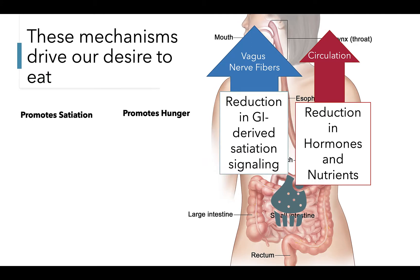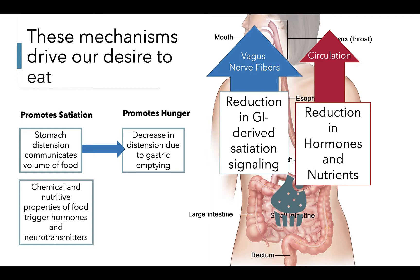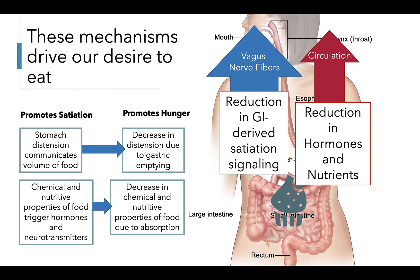These mechanisms drive our desire to eat, and the mechanisms that drive feelings of hunger and satiation are connected. We feel full when our stomach feels full, and this communicates the volume of food consumed to the brain. This distension eventually decreases as our stomach digests the consumed food and the digested food moves into the intestines to be absorbed. This decreased distension results in the feeling of an empty stomach that then stimulates the sensation of hunger. Similarly, chemical and nutritive properties of food trigger hormones and neurotransmitters that promote satiation. The decrease in these chemicals and nutritive properties results in a decline in satiation-promoting hormones and an increase in hormones and neurotransmitters that promote feelings of hunger.